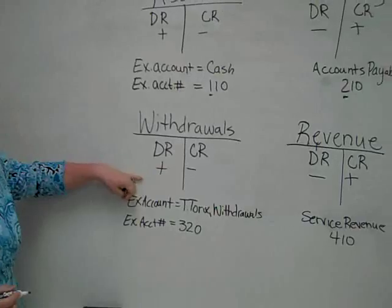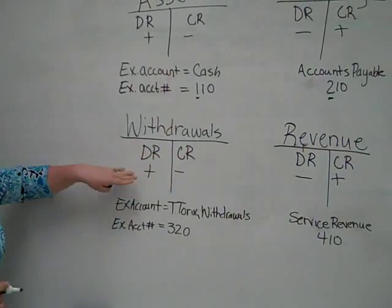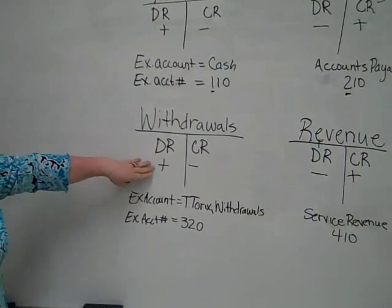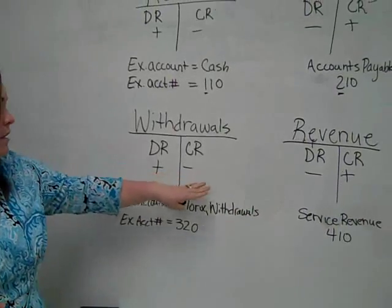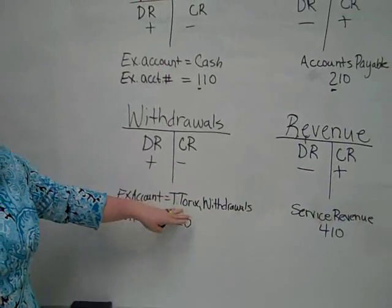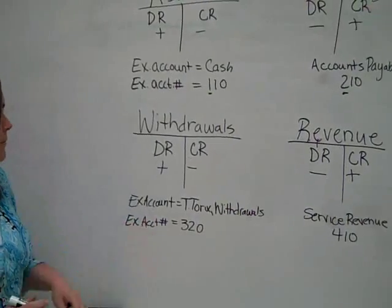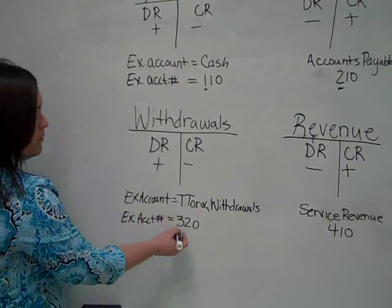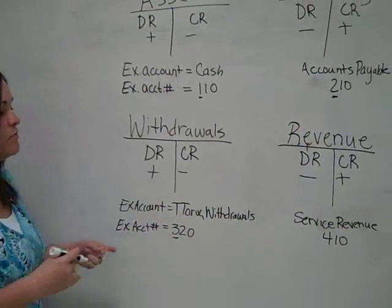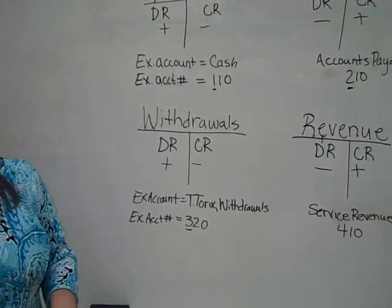Moving down to withdrawals: debit and credit are left and right. The rules for withdrawals are debits are increases and credits are decreases. An example account name would be T. Torix Withdrawals, and an example account number would be 320, because just like capital, withdrawals start with a three.